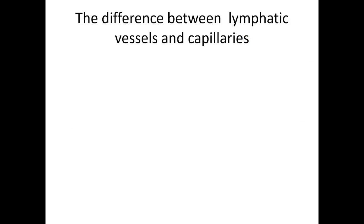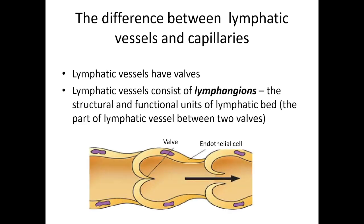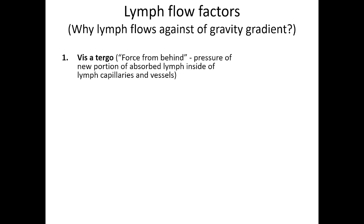The difference between lymphatic vessels and lymphatic capillaries. Lymphatic vessels have valves. Lymphatic vessels consist of lymphangions — the structural and functional units of the lymphatic bed — which are the parts of a lymphatic vessel between two valves. Lymph flow factors: lymph flows against the gravity gradient. The first reason is the so-called vis-a-tergo, a Latin term meaning 'force from behind' — the pressure of a new portion of absorbed lymph inside lymph capillaries and vessels.